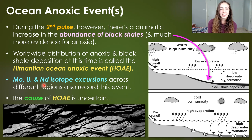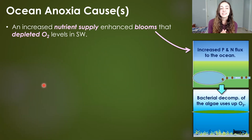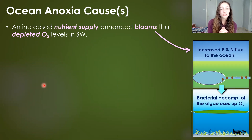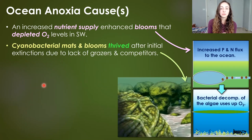The cause of the HOAE is not fully certain, but we think that an increased nutrient supply enhanced blooms that depleted oxygen levels in the seawater — just like we discussed, enhanced nutrient supply from enhanced weathering would have done this. But why might it have waited until after the first extinction pulse? Cyanobacterial mats and blooms are likely the cause for this second pulse of anoxia.